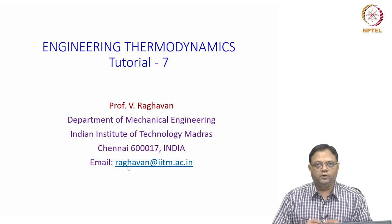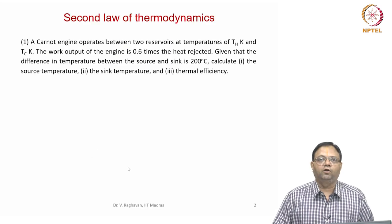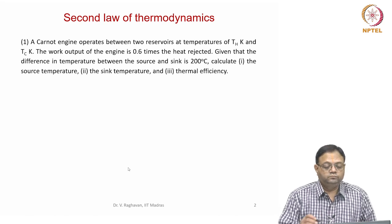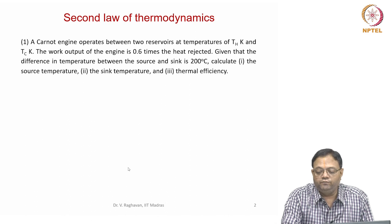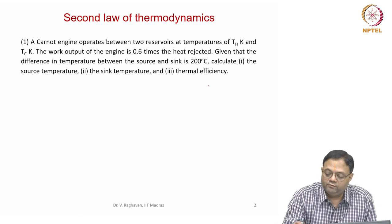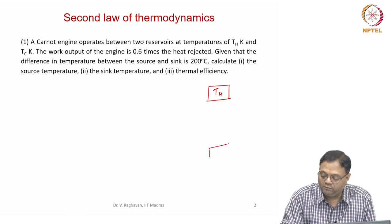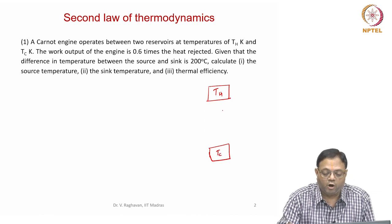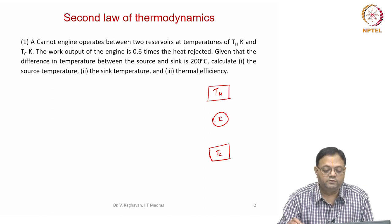Good morning. We will do tutorial number 7 now. This is on the second law of thermodynamics. The first problem: a Carnot engine operates between two reservoirs at temperatures of TH Kelvin and TC Kelvin. Let us draw this — there is a reservoir at TH Kelvin and another at TC Kelvin. A Carnot engine, that is a reversible engine, operates between these two.